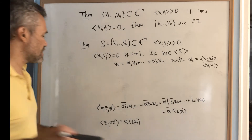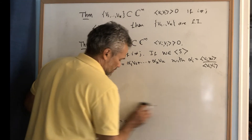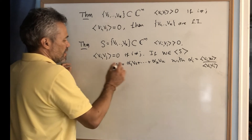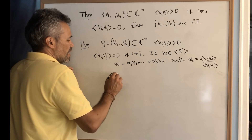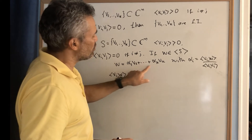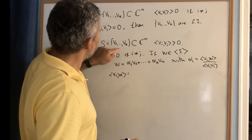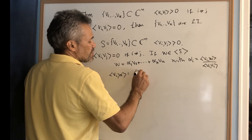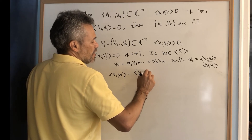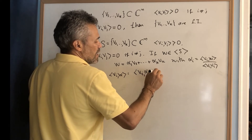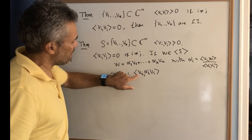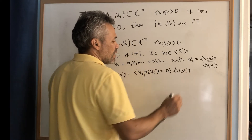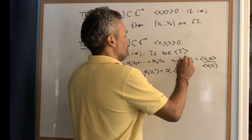The proof is essentially the same as before. We multiply on the left by bᵢ, taking the inner product ⟨bᵢ, w⟩. When we expand this dot product, we get k terms, but most are zero due to perpendicularity. The only surviving term is αᵢ times ⟨bᵢ, bᵢ⟩. Solving for αᵢ gives the formula αᵢ = ⟨bᵢ, w⟩ / ‖bᵢ‖².